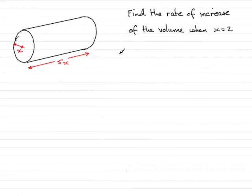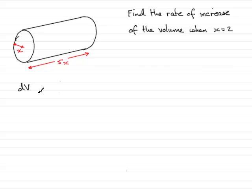Now in the next part of this question, we're asked to find the rate of increase of the volume when x is 2. So when we have this phrase, what we're basically being asked to do is to find the rate of change of the volume, which I'll call v, so it's dv by dt.